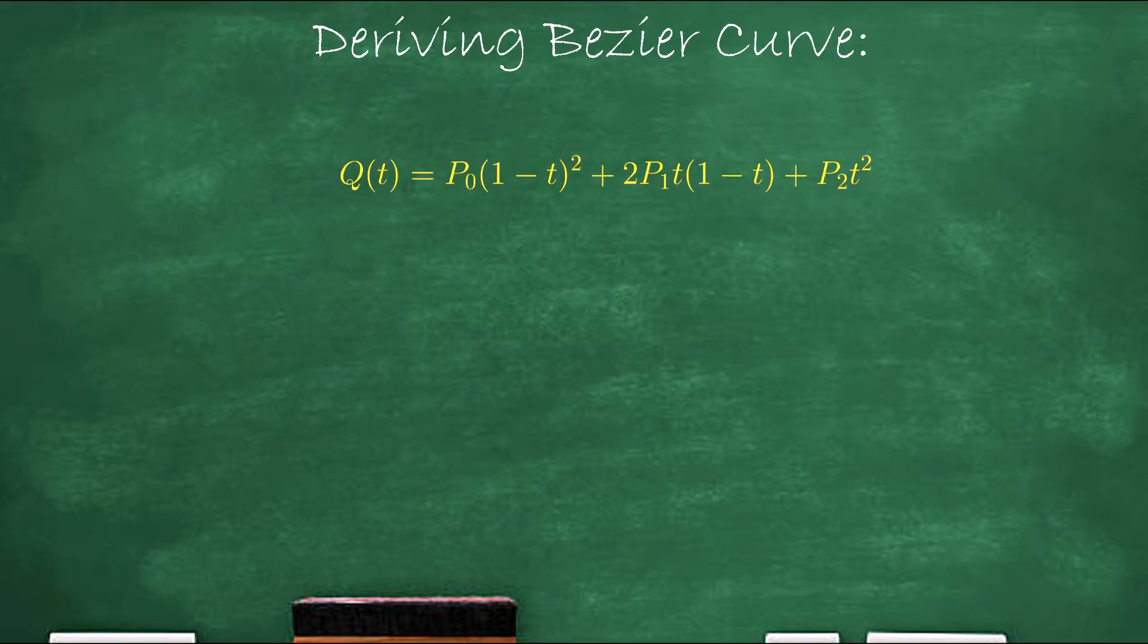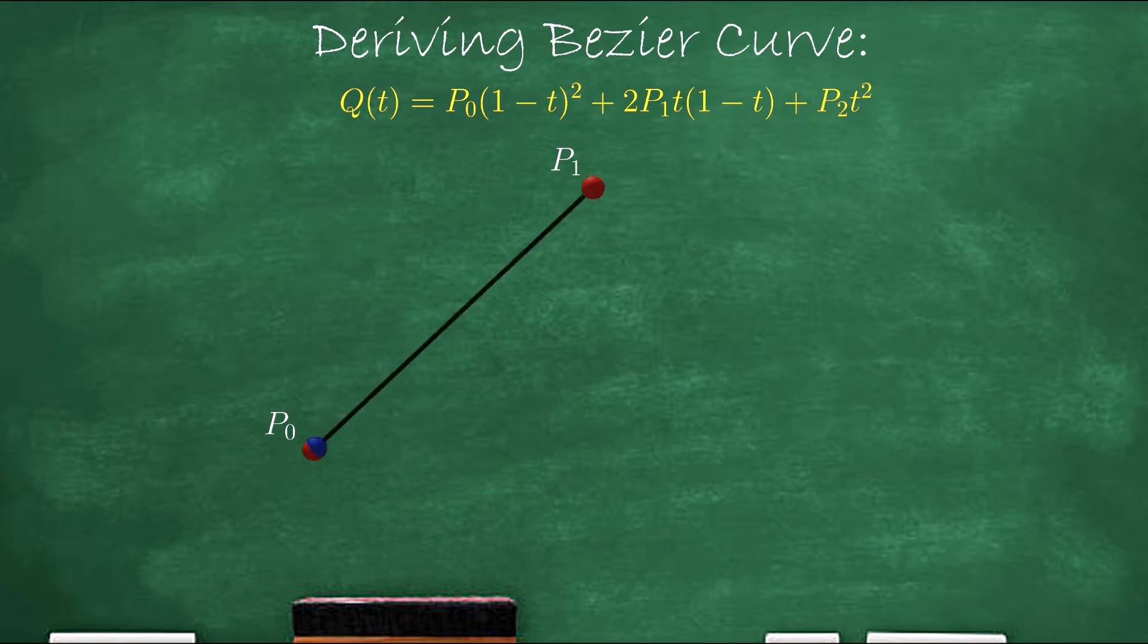So here's how it works. We're going to start off by lerping from point zero to point one. Let's call this interpolation A.